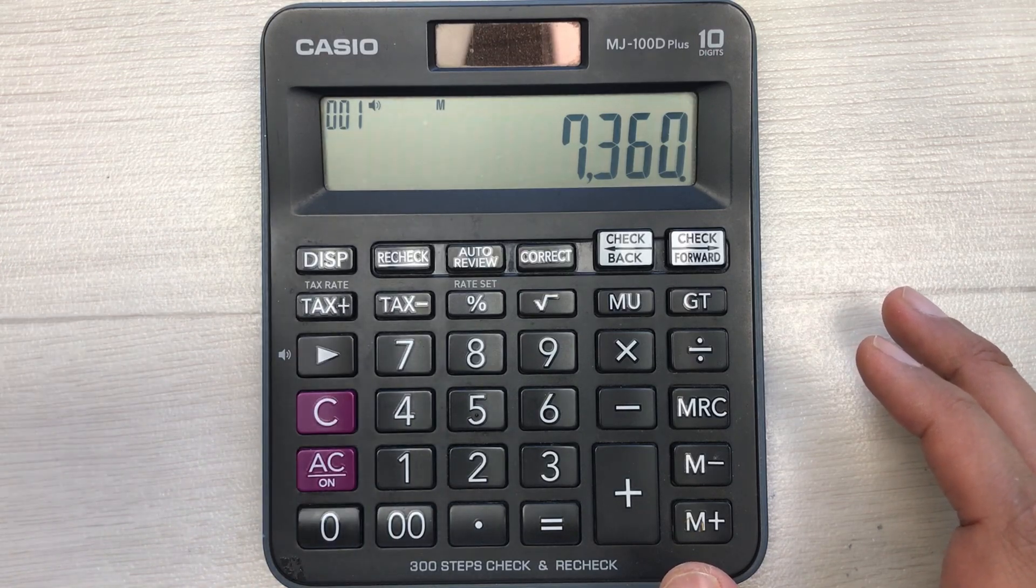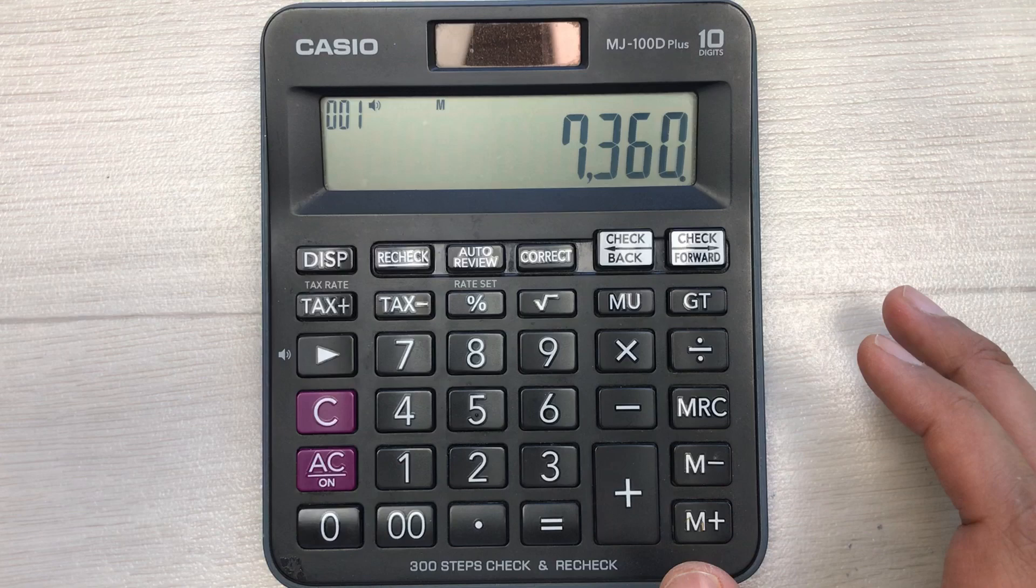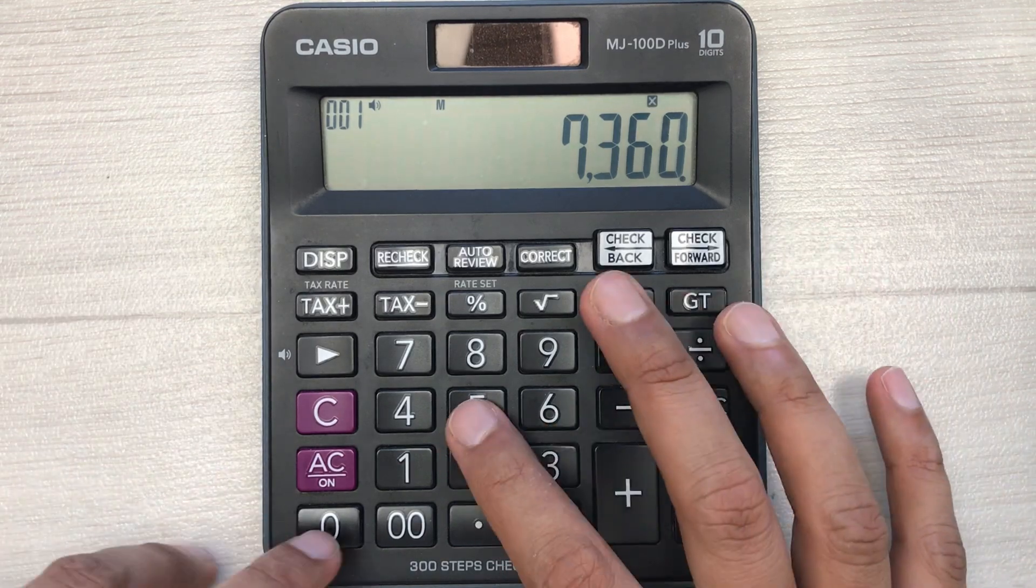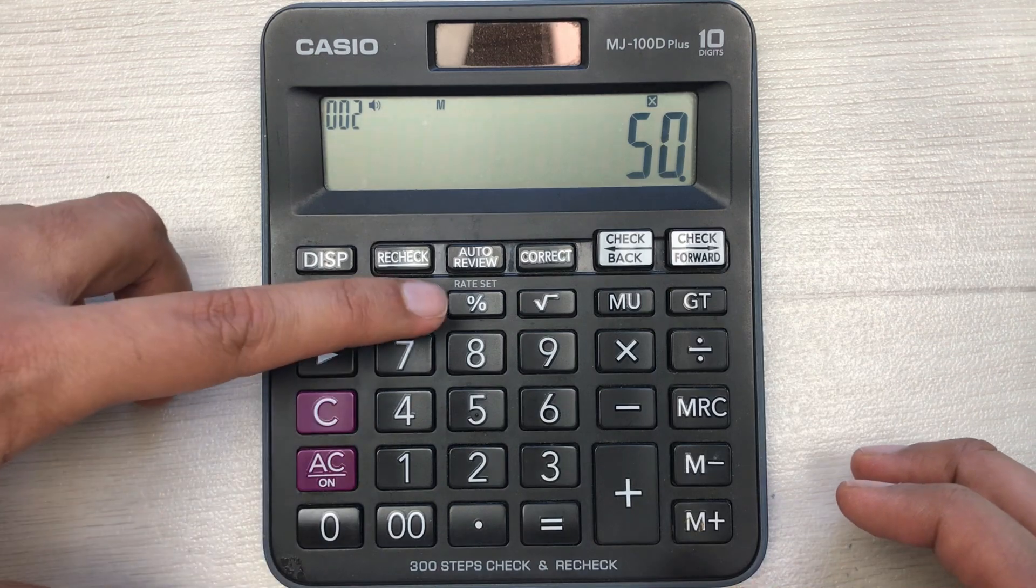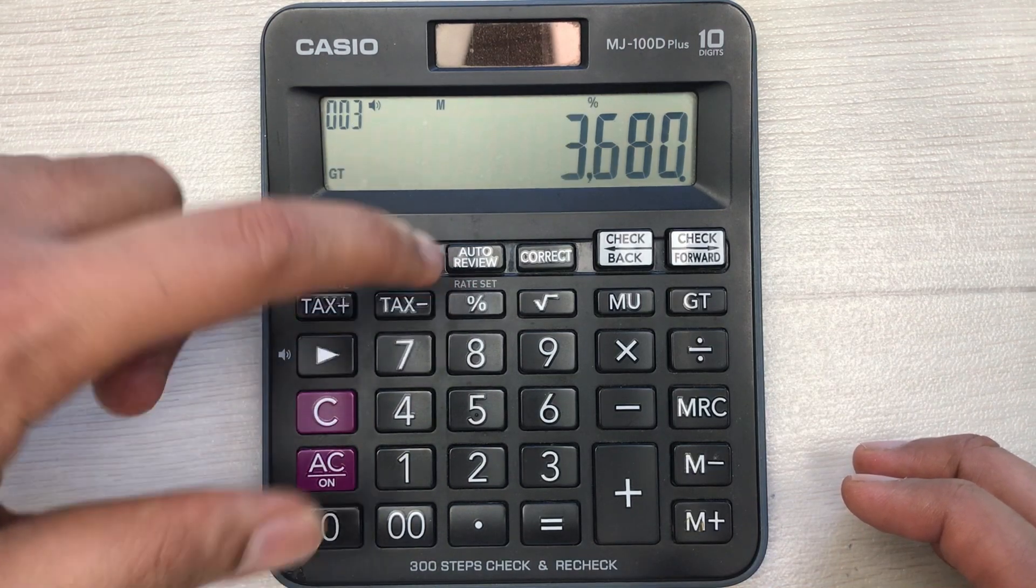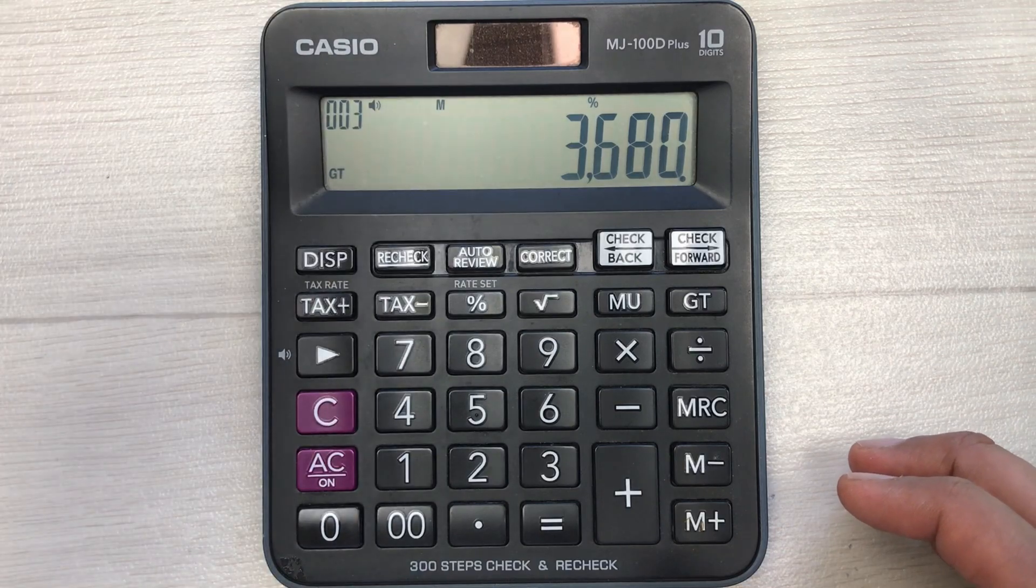So how can you find out the final amount after 50% discount? You can do it in two simple steps. You can multiply it with 50 and then press this percentage button.